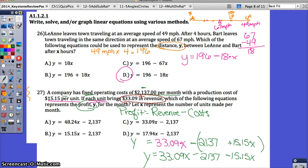Now if you don't see that equation as your options, think about what you can do. We have two like terms that can be combined. Take 33.09X and take away 15.15X. We're going to be left with Y equals 17.94X minus 2,137.